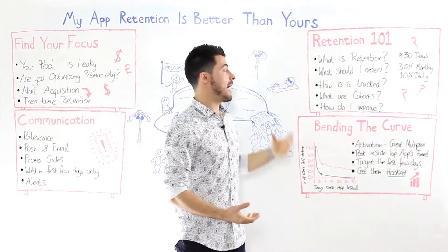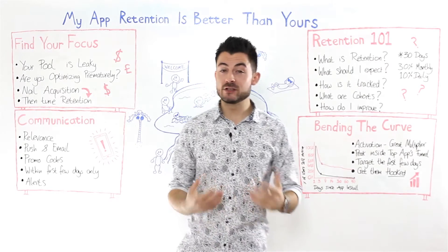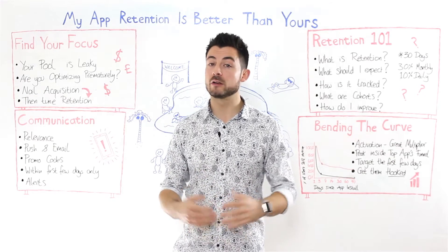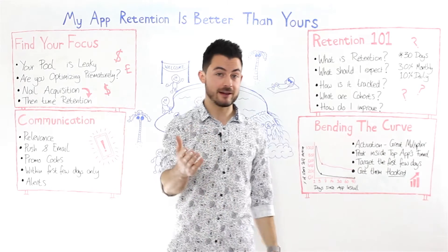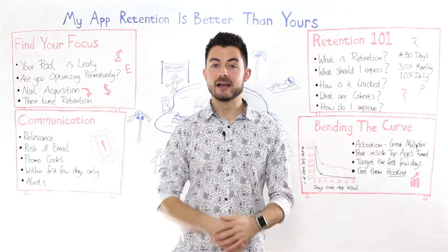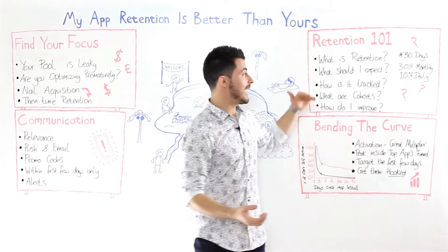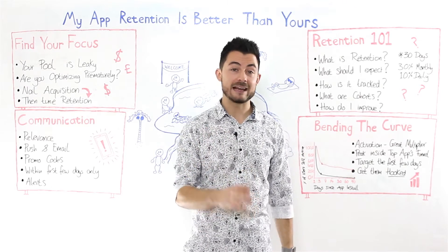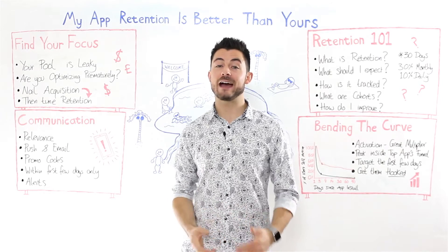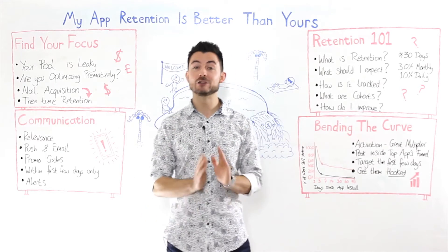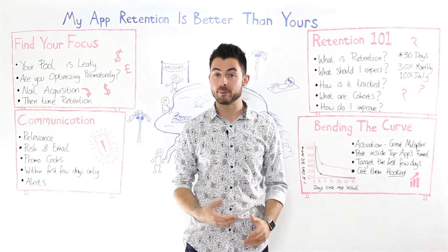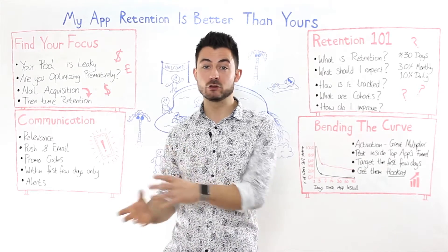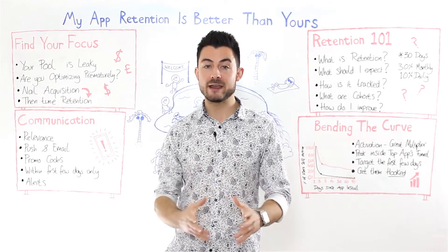An average app loses its install base within about 30 to 60 days — it's lost almost all of its users. But I know you're not an average app; you want to be a top app. You should be aiming for about 30 to 40 percent monthly active users and between 10 and 15 percent of your user base active on any given day. It does depend on your vertical, your business model, and the utility value you provide. Messaging, social, and gaming apps usually enjoy great MAU and DAU by virtue of the incredible utility value they offer.